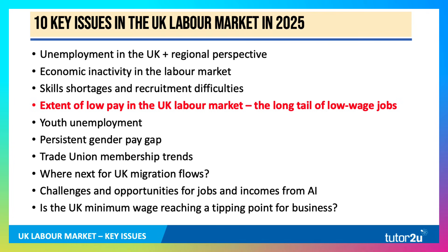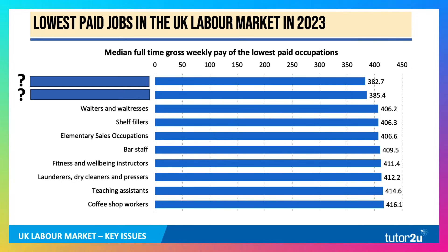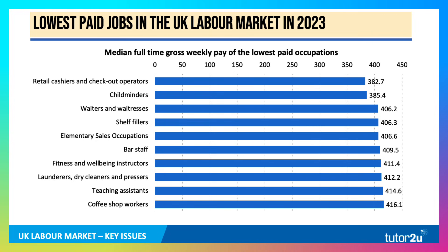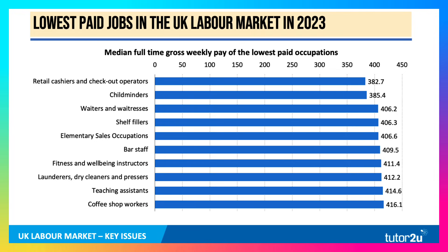Let's think about low pay in the labour market — what I call the long tail of relatively low wage jobs. This chart shows the median full-time gross, in other words before tax, weekly pay of the lowest paid occupations in the UK. The data is for 2023. The answer is that retail cashiers and checkout operators and childminders are the lowest paid, by some distance compared to waiters and waitresses. Many of these jobs are relatively low-skilled, oftentimes entry-level jobs for younger people, and they're not well paid.